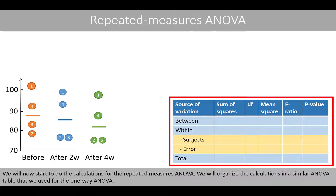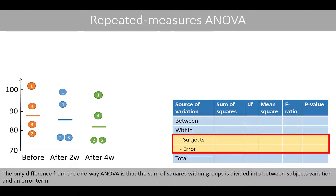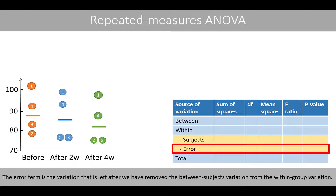We'll now start to do the calculations for the repeated measures ANOVA. We'll organize the calculations in a similar ANOVA table that we used for the one-way ANOVA. The only difference from the one-way ANOVA is that the sum of squares within groups is divided into between-subjects variation and an error term. The error term is the variation that is left after we removed the between-subjects variation from the within-group variation.